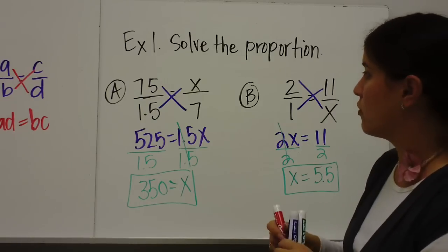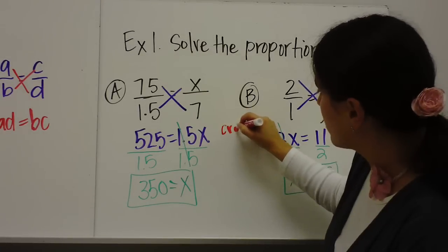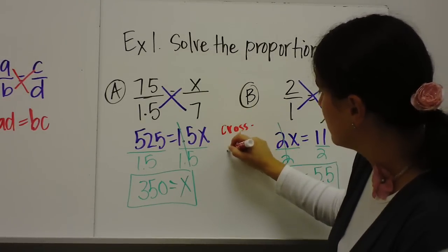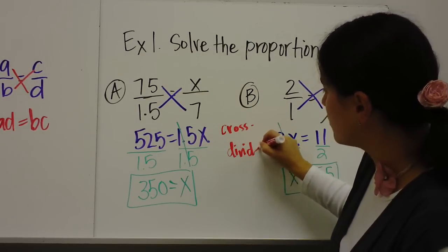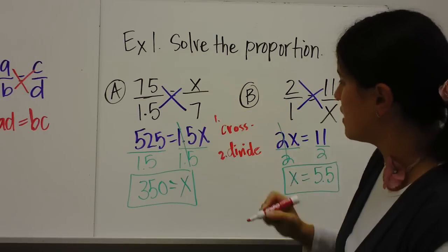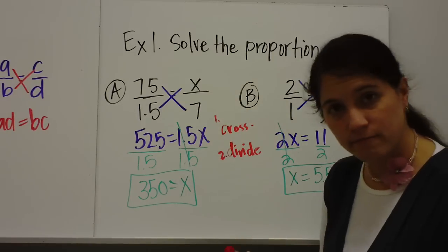So let me go back and review one more time. We cross multiply, and then you divide. Step 1, you cross multiply. Step 2, you divide to get X.